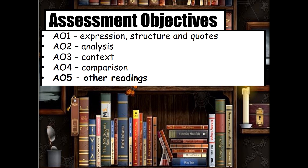AO4 is a comparison objective, which is a skill we practice through the study of poetry at GCSE. The new objective for us is AO5, which is where we consider alternative interpretations of texts. These could be film or theatre adaptations, critics' opinions or schools of thought such as feminism.